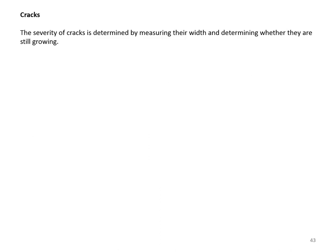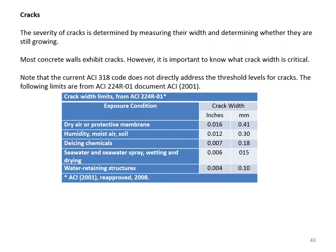The severity of cracks is determined by measuring their width and determining whether they are still growing. It is important to know what crack width is critical. The current ACI 318 code does not directly address threshold levels for cracks; the following limits are from ACI 224R-01 (published 2001, reapproved 2008). For seawater and wetting/drying conditions, the limit is 0.006 inches; for water-retaining structures, 0.004 inches.